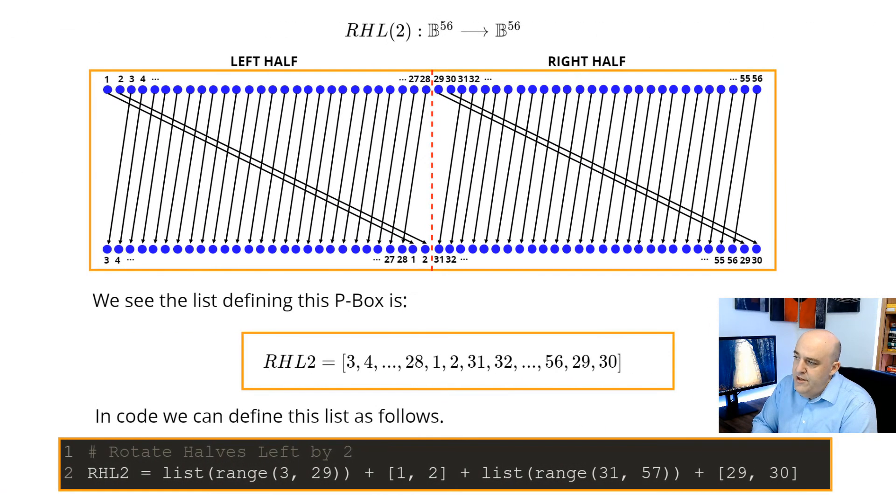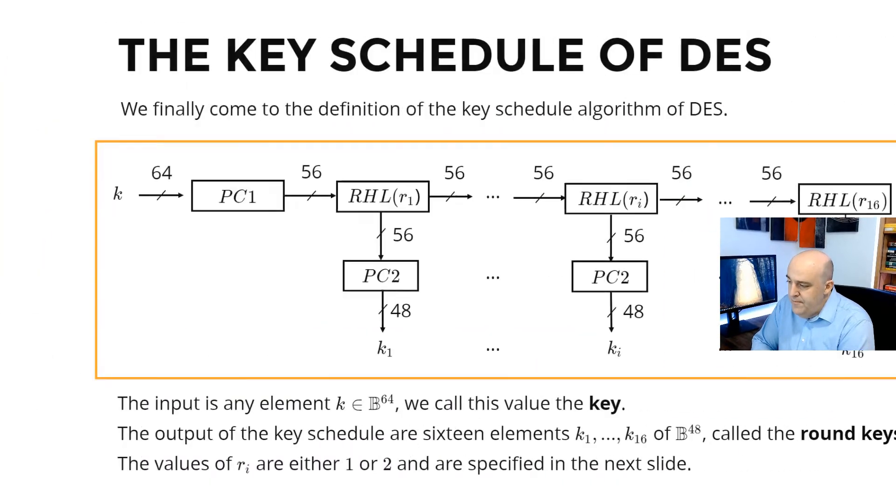And similarly, RHL2, where we rotate each half to the left by 2, can be visualized with this arrow diagram. And here's the list for it, RHL2. And we'll implement that in Python the same way, just using the list and the range functions there.